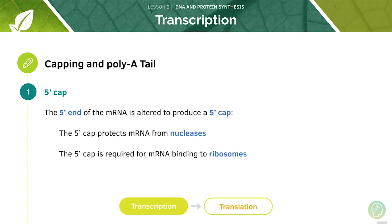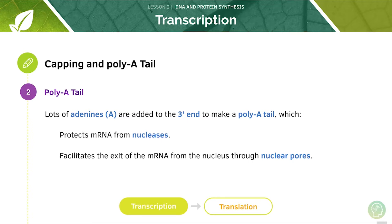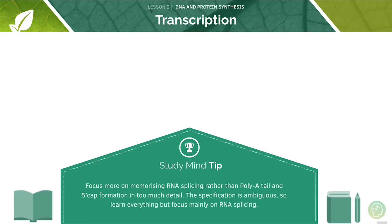The 5' end of the mRNA can be altered to produce a 5' cap. This protects the mRNA from nucleases and is required for it to bind to ribosomes. The poly-A tail means that lots of adenines are added to the 3' end, which also protects it from nucleases and facilitates the exit of mRNA from the nucleus through nuclear pores. When it comes to translation and transcription long answer questions, including the functions of a poly-A tail and 5' cap will raise you to an A-star level.